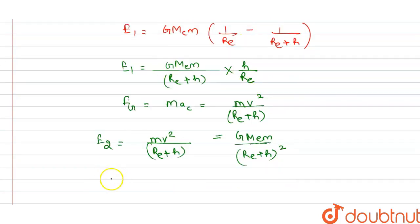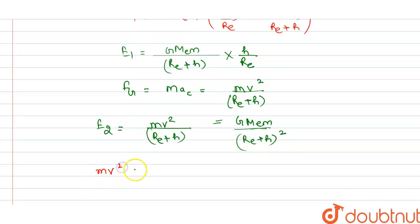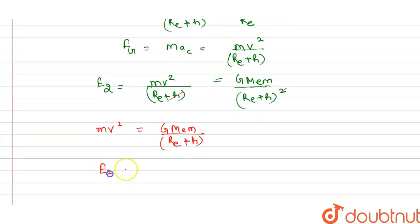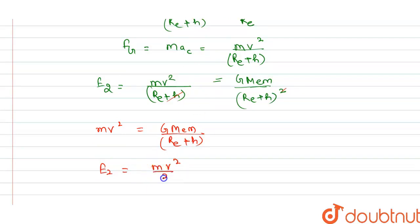On solving, mv² = GMₑm/(R+h). From this, E2 = mv²/2 = GMₑm / [2(R+h)].